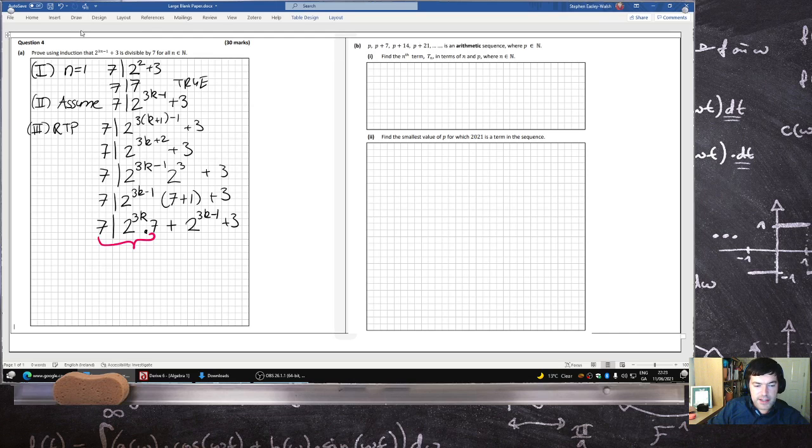So 7 does divide into this. This is clearly true. And then 7 does divide into this because that's from what we assumed in 2.